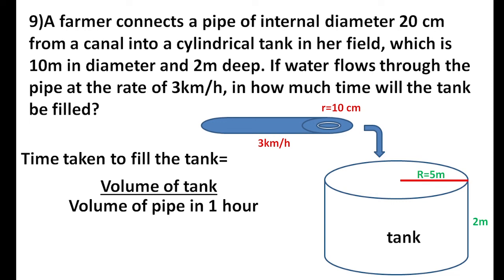The important thing is finding the volume of the tank. The two shapes are cylindrical, so we use the formula pi r squared h. We use capital letters for the tank and small letters for the pipe. The pi will cancel out.